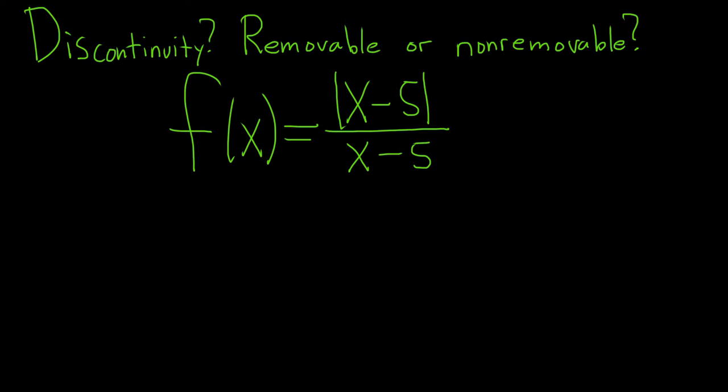First of all, it's pretty clear where the function is not continuous. It's not continuous at x equals 5, and the reason is it's not defined there. If you plug in 5, you get 0 over 0, which makes no sense. So it's discontinuous here, so this is the discontinuity.